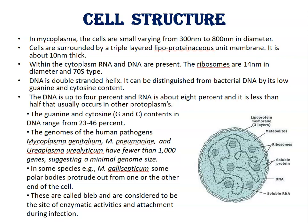The genomes of human pathogens — for example, Mycoplasma genitalium, Mycoplasma pneumoniae, and Ureaplasma urealyticum — have fewer than 1000 genes, suggesting a minimal genome size. In some species, for example Mycoplasma gallisepticum, polar bodies protrude from one or the other end of the cell. These bodies are considered to be sites of enzymatic activities and also assist in attachment during infection.